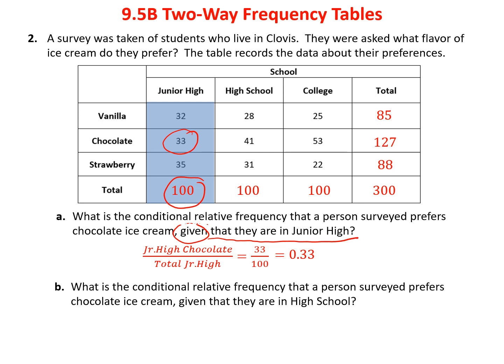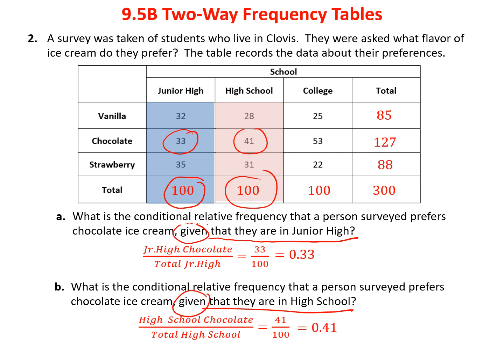What's the conditional relative frequency that a person prefers chocolate given they're in high school? Looking at only the high school column: 41 students preferred chocolate out of 100 total. So the conditional relative frequency is 41 over 100, or 41%. As you move up to high school, more students preferred chocolate than they did in junior high.